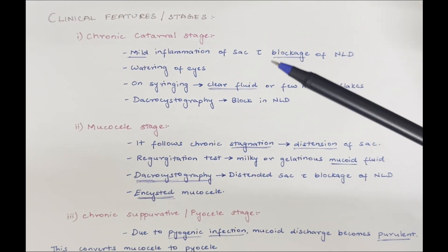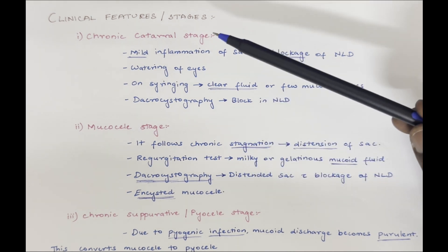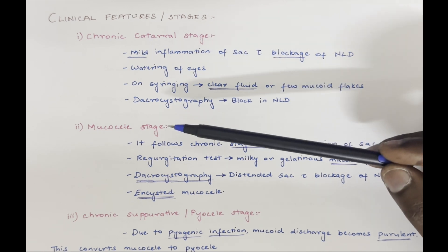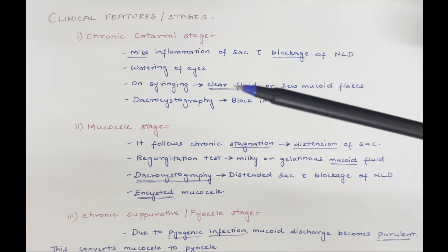Clinical features of chronic dacryocystitis: first we have chronic catarrhal stage, mucosal stage, chronic suppurative or pyocele stage and then there is fibrotic stage.